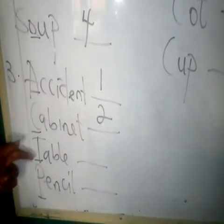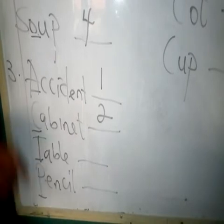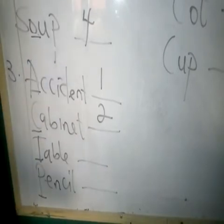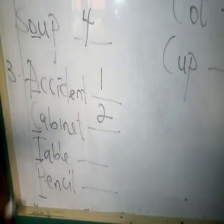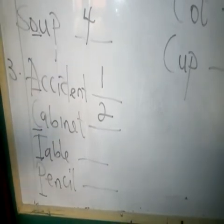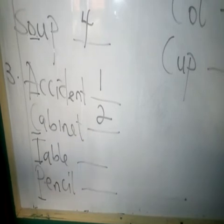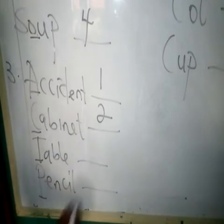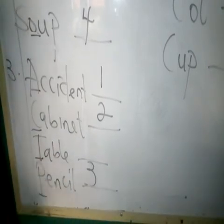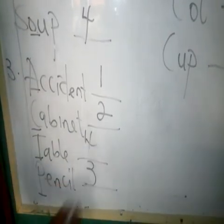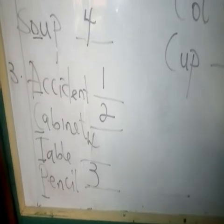Now it's between T and P. Which one will come first? Reading the alphabet: A, B, C, D, E, F, G, H, I, J, K, L, M, N, O, P — P comes before T. So P gets number 3, and the last one, T, gets number 4.